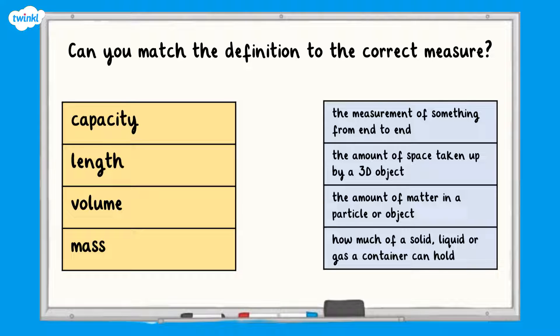Can you match the definition to the correct measure? You have capacity, length, volume and mass to match to the correct definition. Either the measurement of something from end to end, the amount of space taken up by a 3D object, the amount of matter in a particle or object and how much a solid, liquid or gas a container can hold.